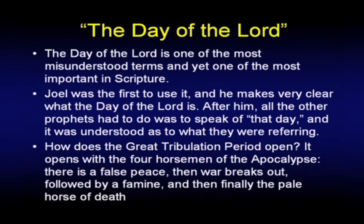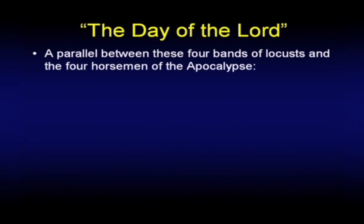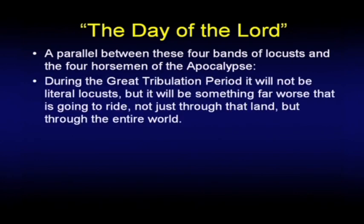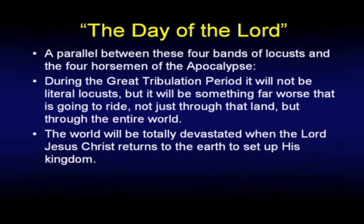How does the great tribulation open? It opens with the four horsemen of the apocalypse — there's a false peace, then war breaks out, followed by a famine, and finally the pale horse of death. There's a real parallelism between the great tribulation as echoed in the other prophets and the way we see it portrayed in Revelation chapter 6. The parallel between these four bands of locusts and the four horsemen of the apocalypse is interesting. During the tribulation period, it will not be literal locusts — it will be something far worse riding not just through that land, but through the entire world.